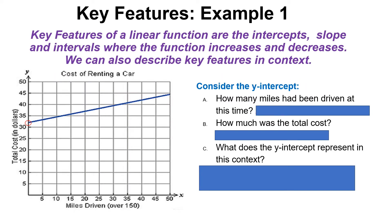Let's discuss some key features. Some key features of linear functions are the intercepts, or where the graph crosses each axis - so your x-axis or your y-axis. Here this is my y-axis and this is my x-axis. Some key features would be where that graph crosses each particular axis, and also the slope or the rate of change, and the intervals where the function increases or decreases.